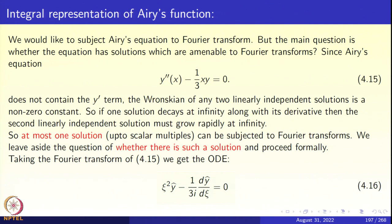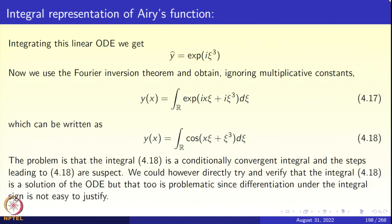Let us proceed formally and take the Fourier transform of equation 4.15. The Fourier transform of y'' gives −χ²·ŷ. The Fourier transform of x·y gives (1/i)·d/dχ of ŷ. The resulting ODE (equation 4.16) is χ²·ŷ − (1/(3i))·d/dχ ŷ = 0. This is a first-order linear ODE, which we can immediately solve: ŷ = e^(iχ³). However, e^(iχ³) is certainly not in L1, let alone the Schwarz class.